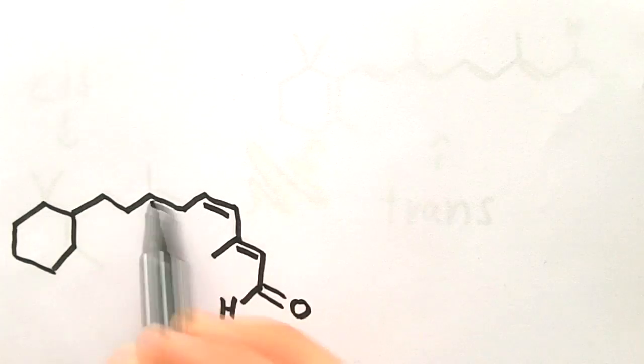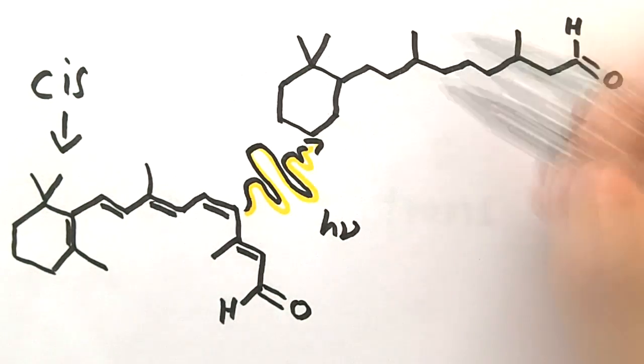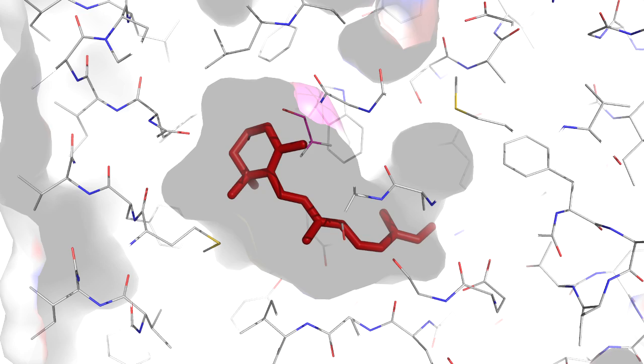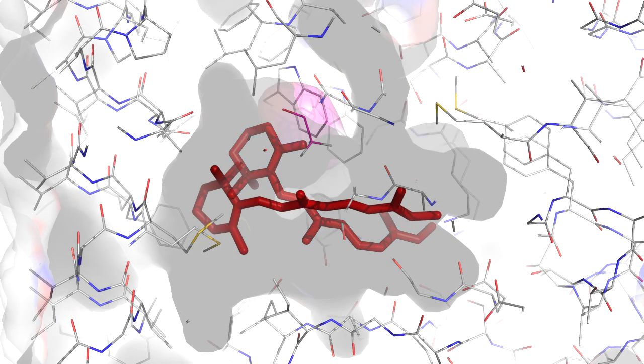After absorption of a photon, cis-retinal can isomerize to its trans form via the rotation around one of its bonds. As you can see, this isomerization alters the three-dimensional structure of the retinal considerably.